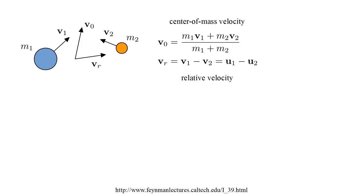The relative velocity V-R is V-1 minus V-2. This is the velocity of particle one as seen by particle two. This is also U-1 minus U-2, where the U's are the velocities in the center of mass frame.